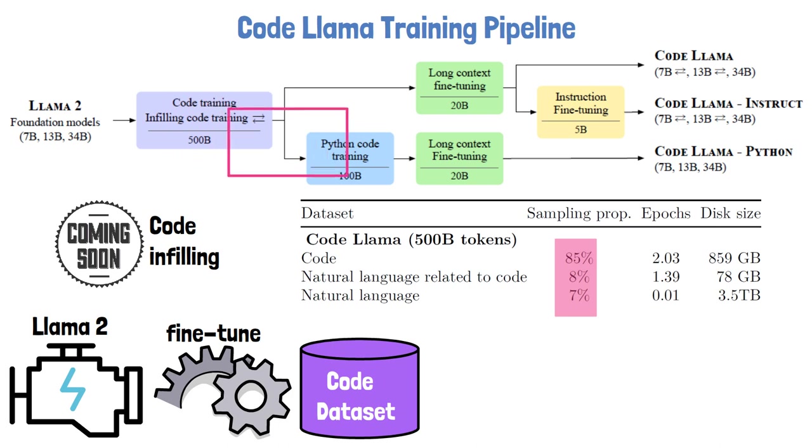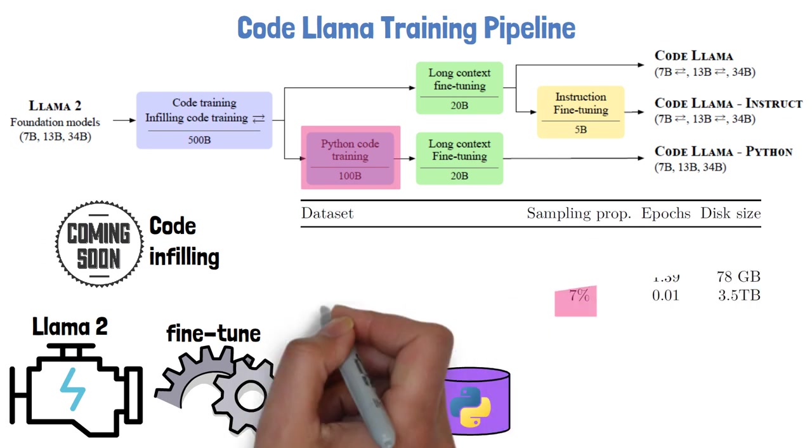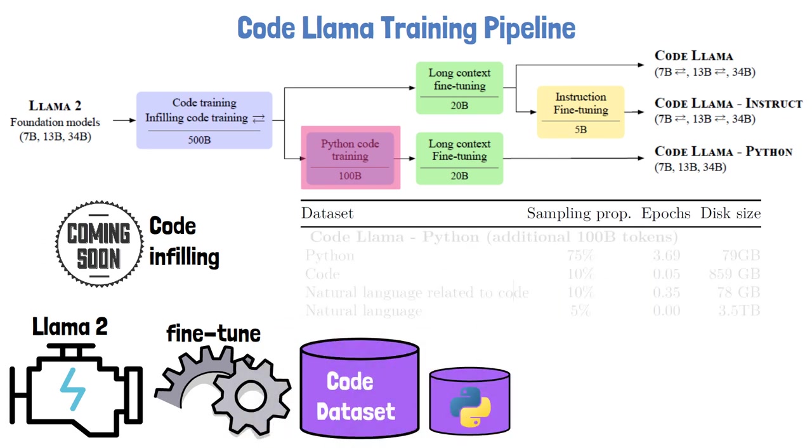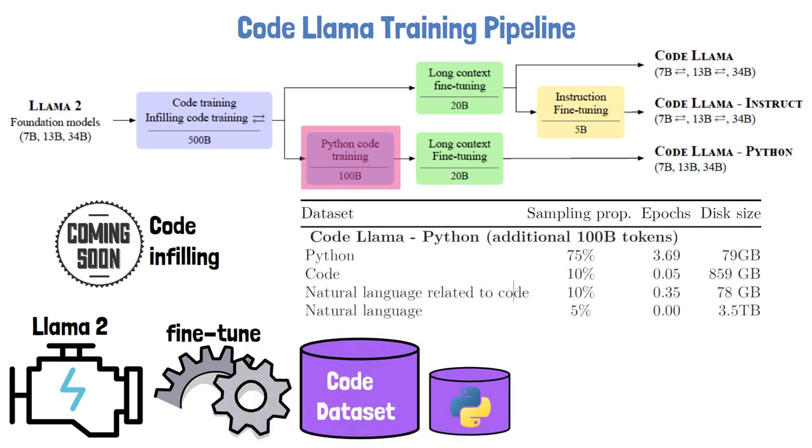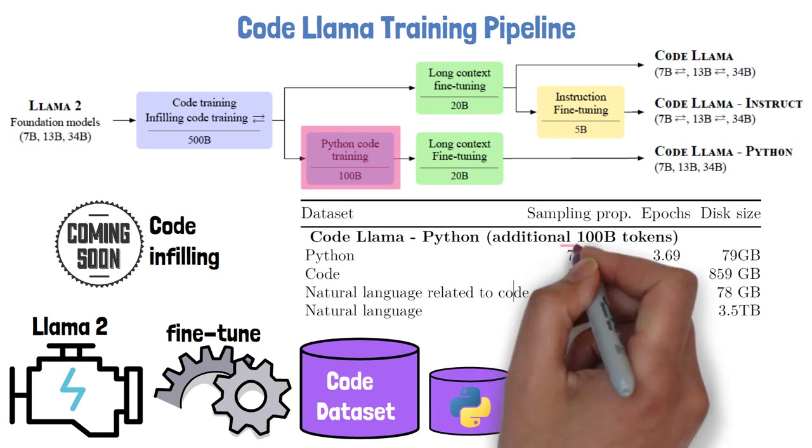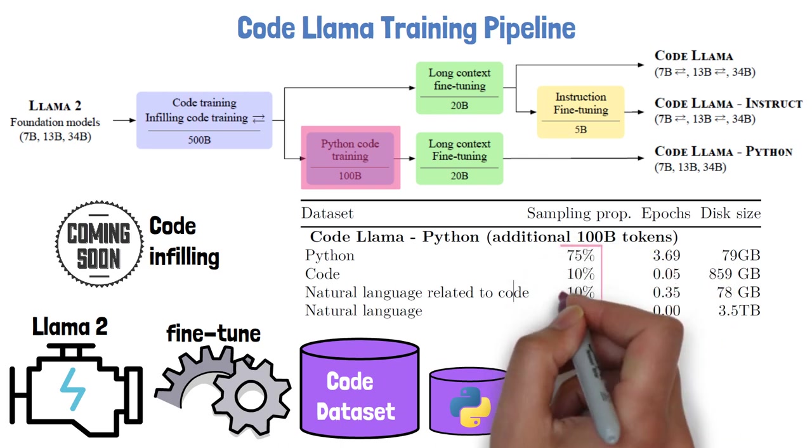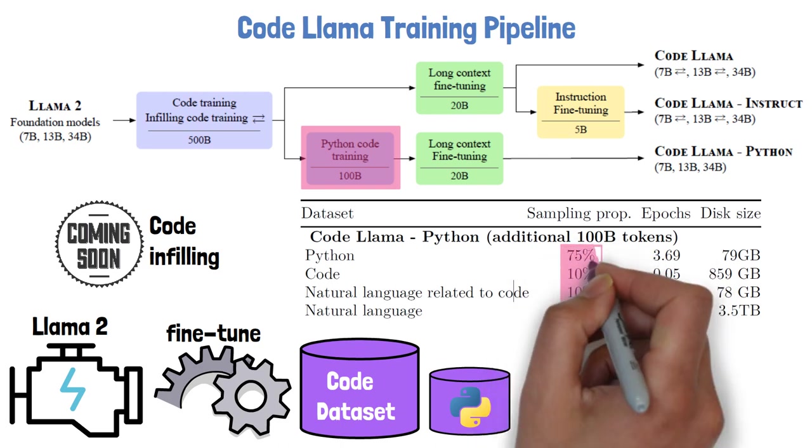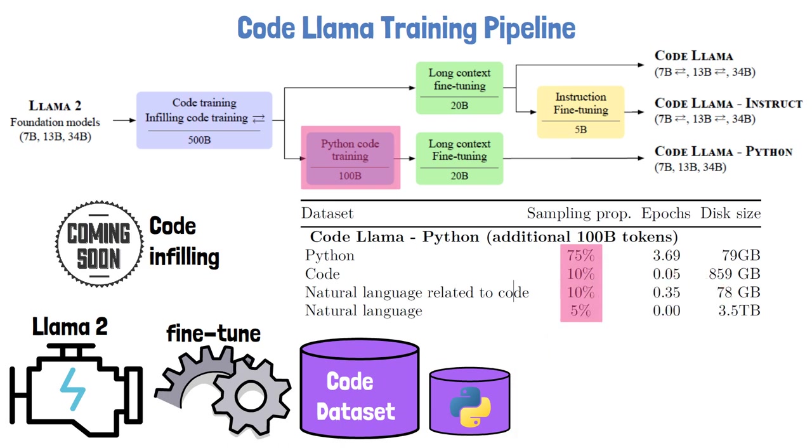For the CodeLama Python model we have another step in the pipeline of Python code training, where the model we trained in the previous step continued training on another dataset of 100 billion tokens, which is targeted for Python. In the following table from the paper we can see the distribution for this dataset, which contains 75% of Python code, 10% of other code, 10% of natural language related to code, and another 5% of natural language.